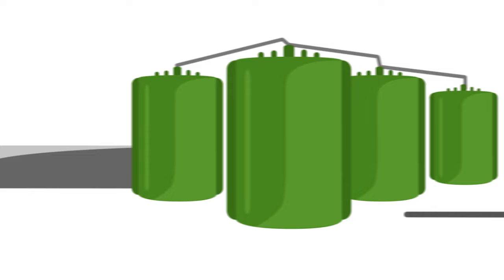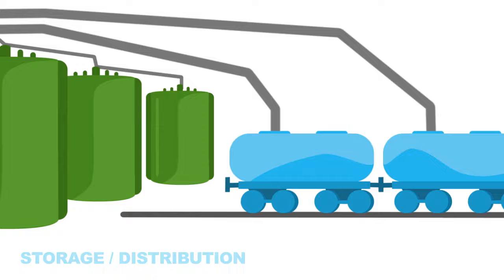It is transferred to storage tanks and then loaded onto rail tank cars, cargo tank trucks, or barges for shipment.